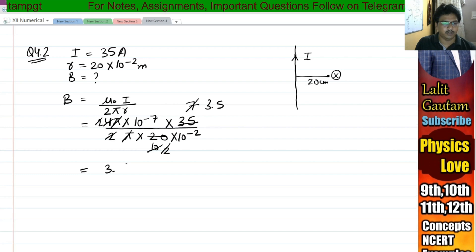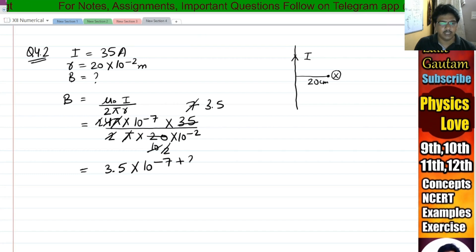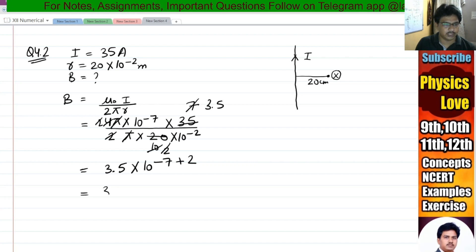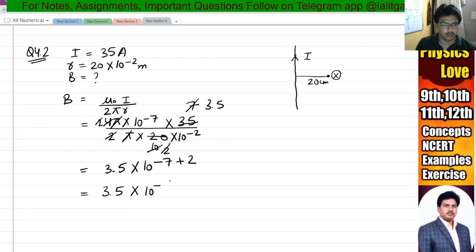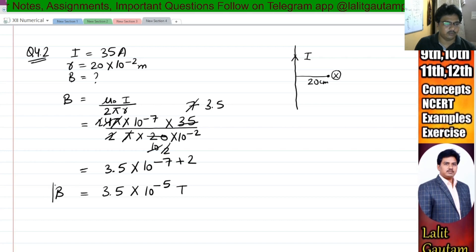We get 3.5 into 10 to the power minus 7 plus 2. So we can write this as 3.5 into 10 to the power minus 5 tesla. This is the value of magnetic field.